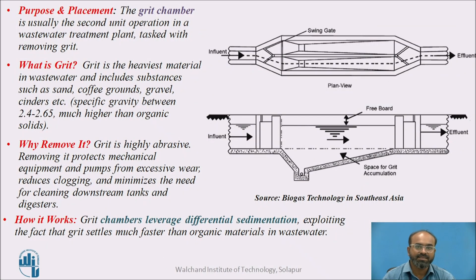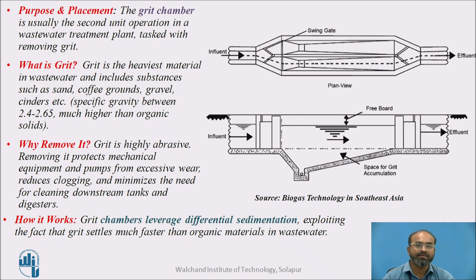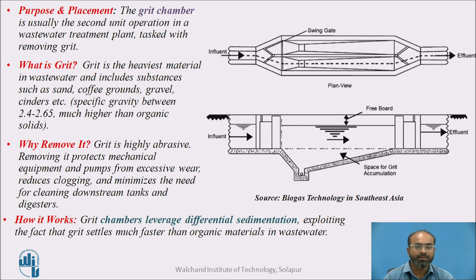First of all, let us see what is a grit chamber and why it is needed. A grit chamber is usually a secondary unit operation after screening in a wastewater treatment plant, tasked basically to remove grit. Grit is the heaviest material in wastewater, which includes various substances like sand, coffee grounds, gravel, cinders — materials having a specific gravity between 2.4 to 2.65 — and they are very much heavier than organic material.